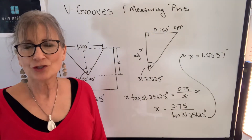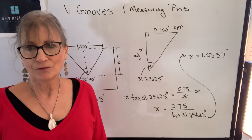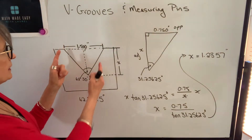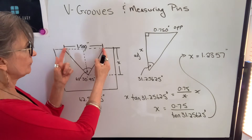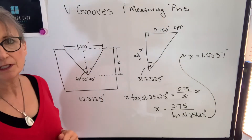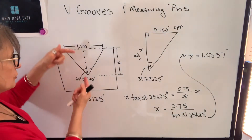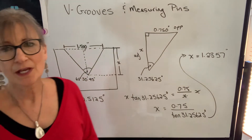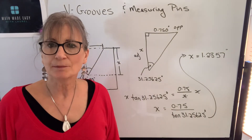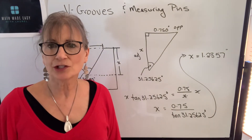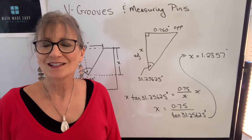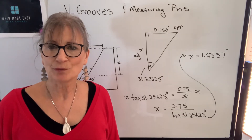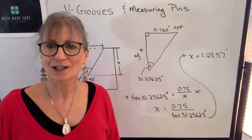However, when you're checking your V-grooves, you're not going to have an instrument that is going to be able to measure this width accurately, nor are you going to have an instrument that will measure this depth accurately. Therefore, you're going to be using measuring pins to check the accuracy of your V-grooves. So let's take a look at an example where we will use a measuring pin to check that accuracy.